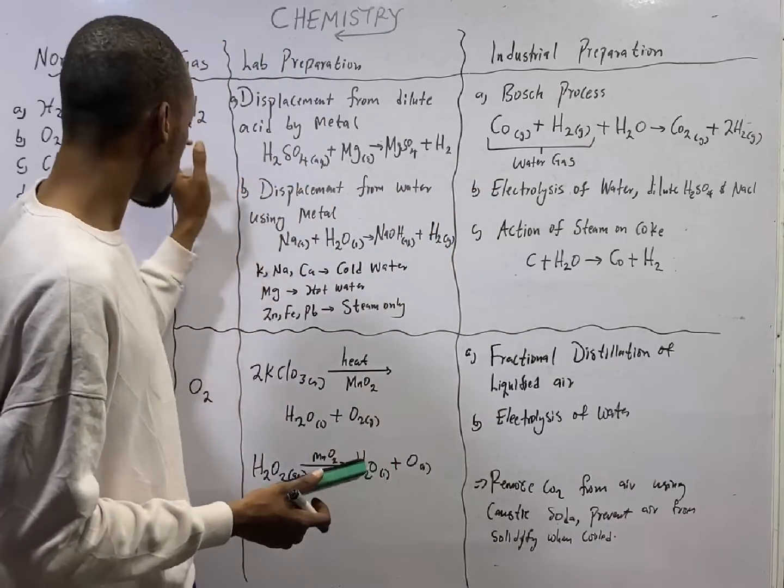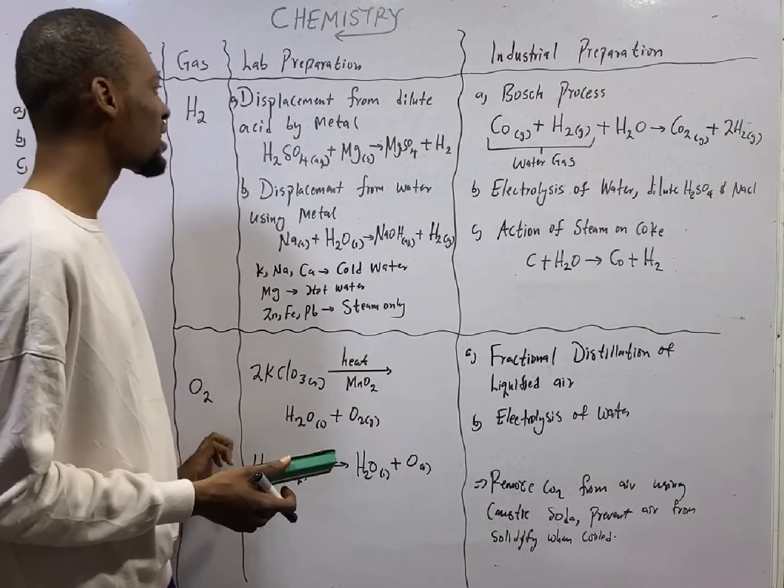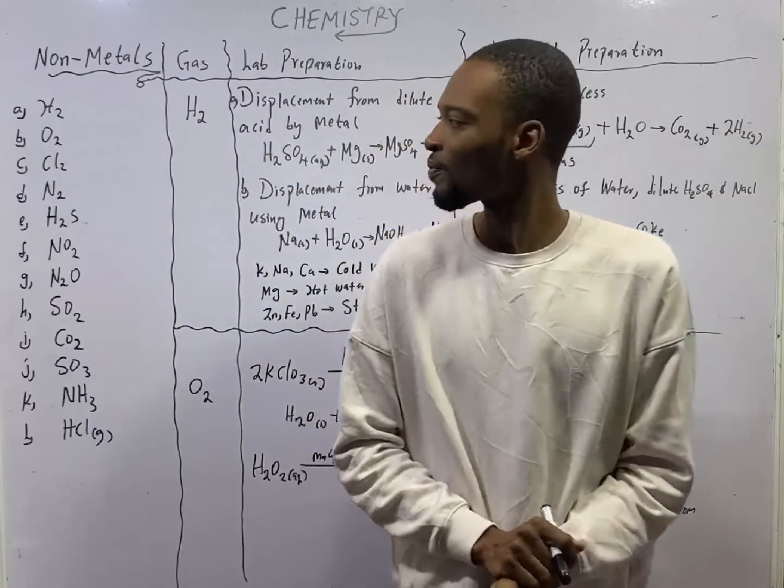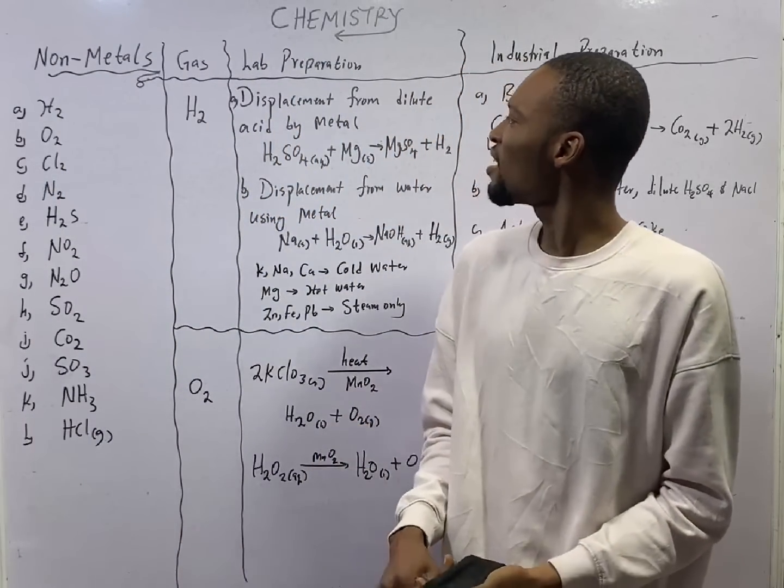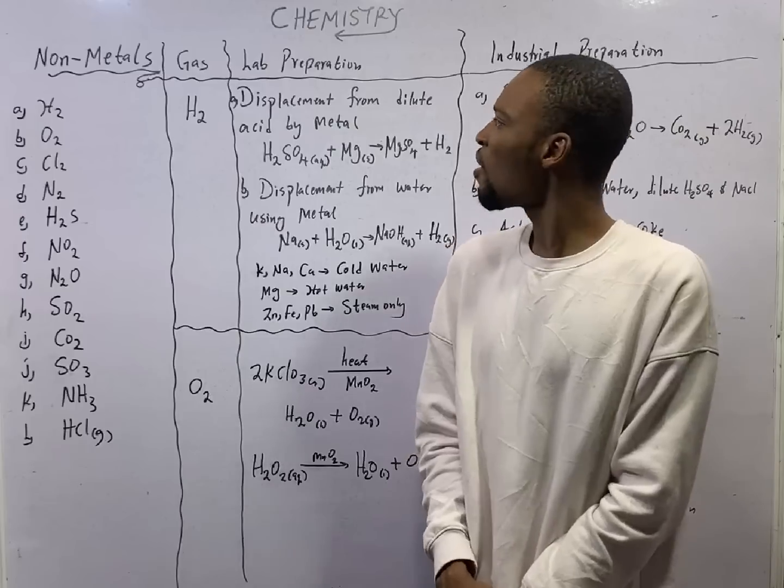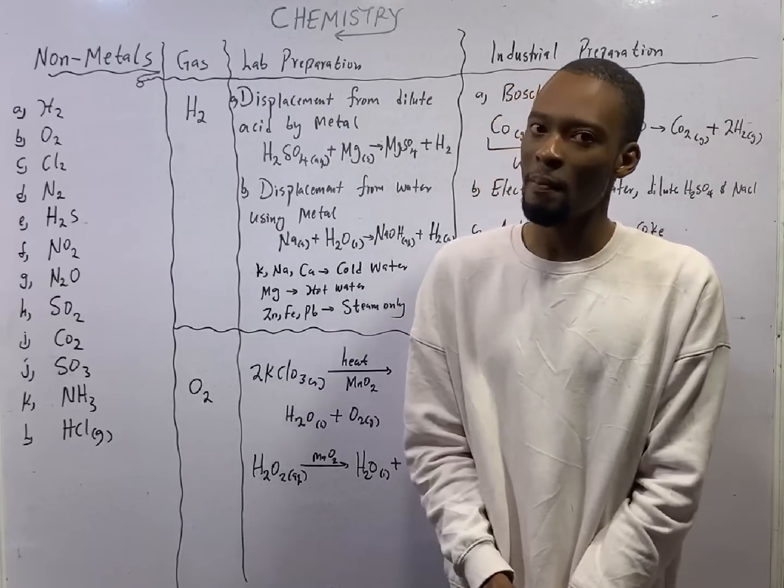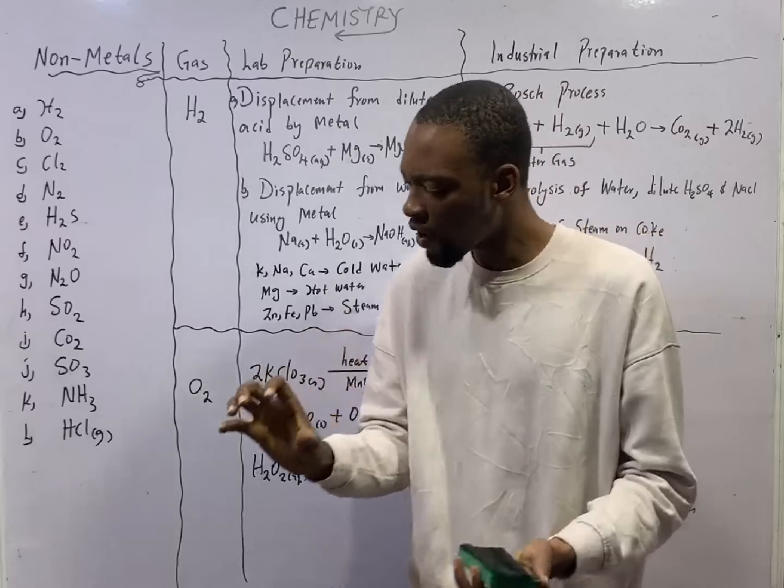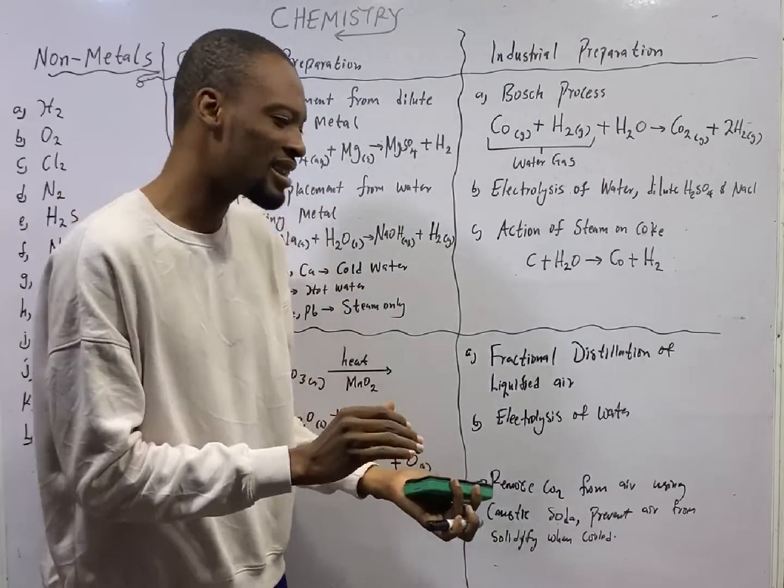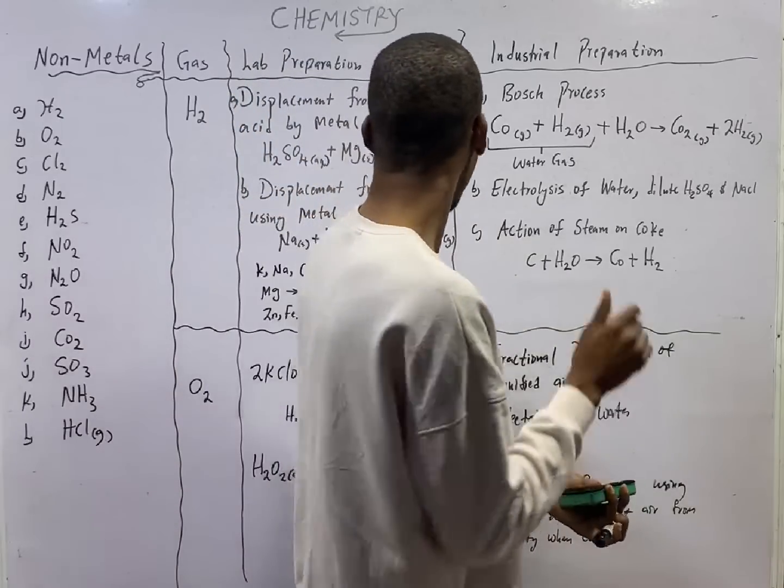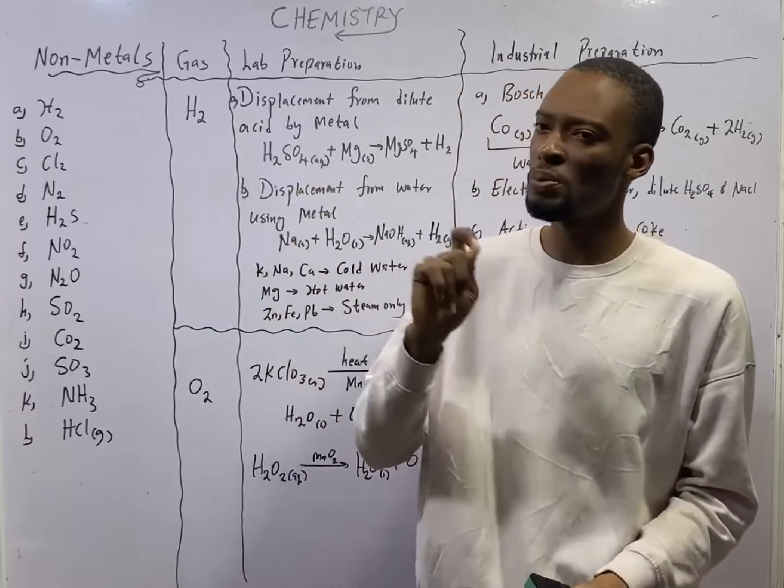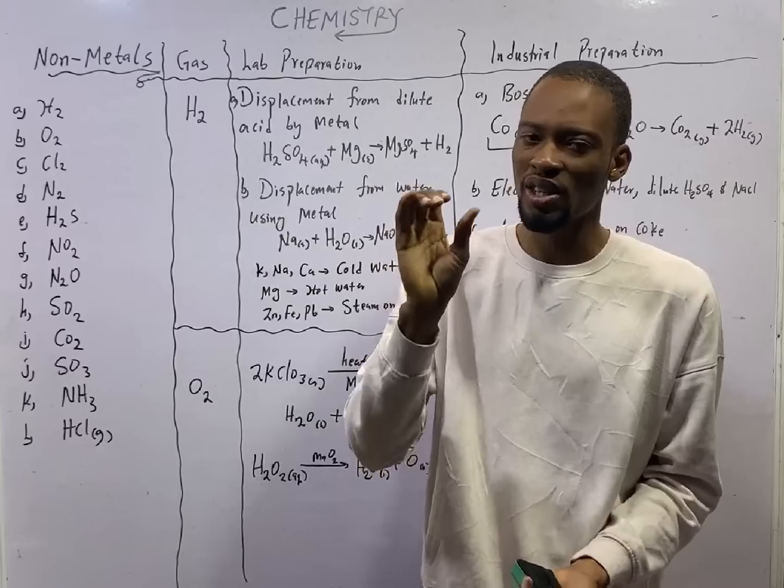Preparation of hydrogen gas and oxygen gas. In the lab, there are two major ways to prepare hydrogen gas. The first one is displacement from dilute acid by metal. Under acid, bases and salts, and under the chemical properties of acid, I explained that whenever an acid reacts with metals, hydrogen will be displaced. You will get salt and hydrogen.